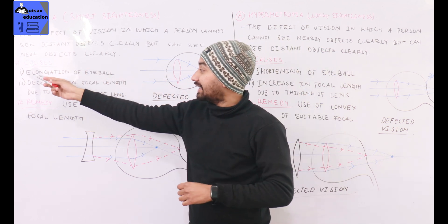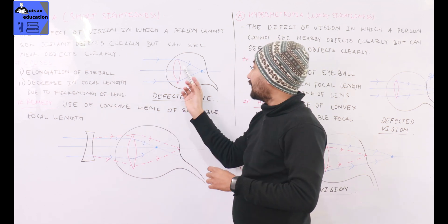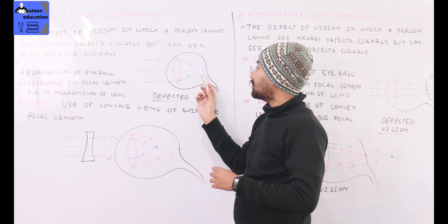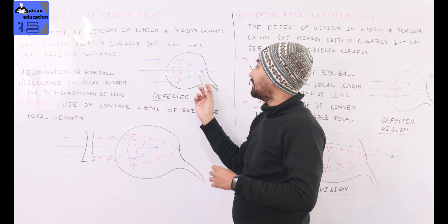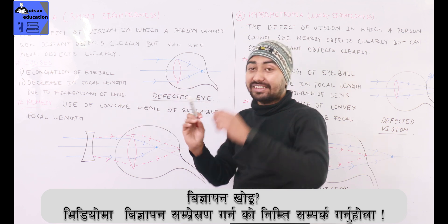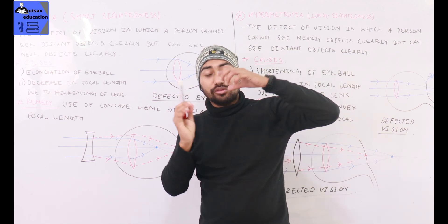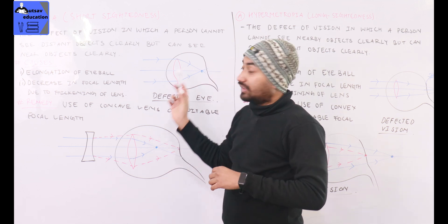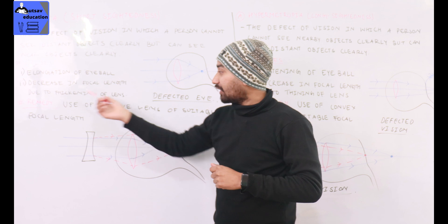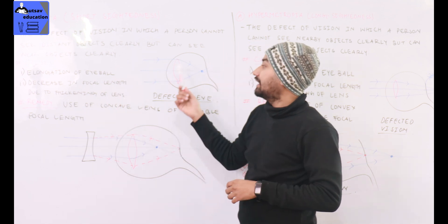The causes of myopia are: elongation of the eyeball, or a decrease in focal length due to thickening of the lens. When the focal length decreases due to the lens becoming thick, the image forms in front of the retina instead of on it.